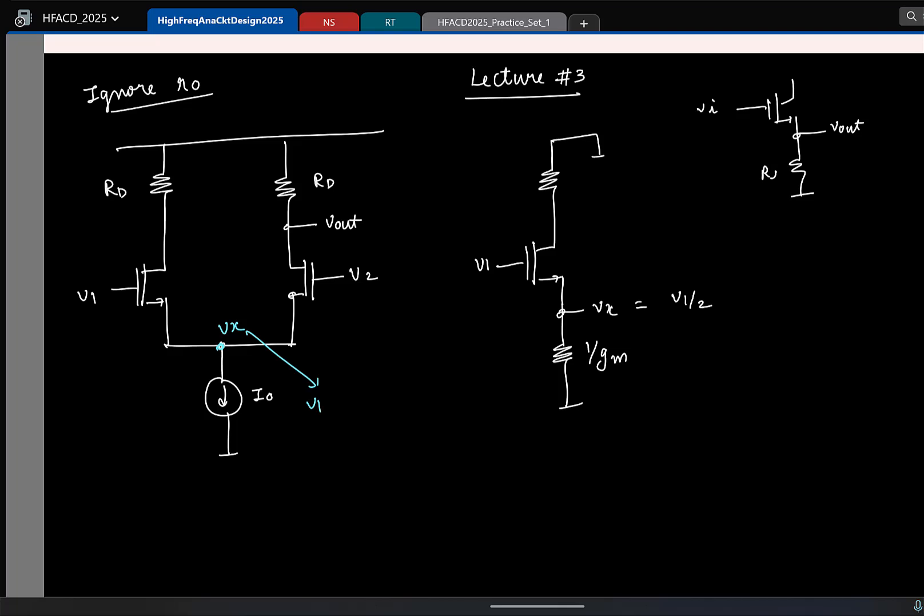So here what is the value of Rs? 1 by gm, so if you put Rs as 1 by gm, what do you get? gm times Rs by 1 plus gm Rs, Rs is indeed equal to 1 by gm. So if you put what do you get? 1/2. Yeah, so that is only half the picture, this is effect of only V1. So similarly what do you think the effect of V2 will be? Same. So what do you think total Vx will be? V1 plus V2 by 2.